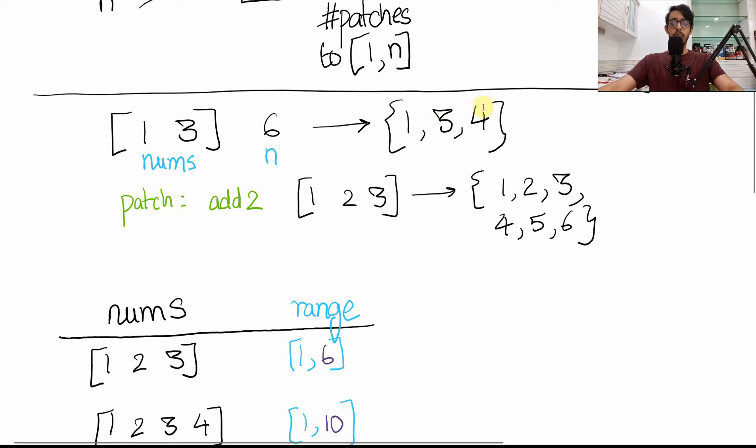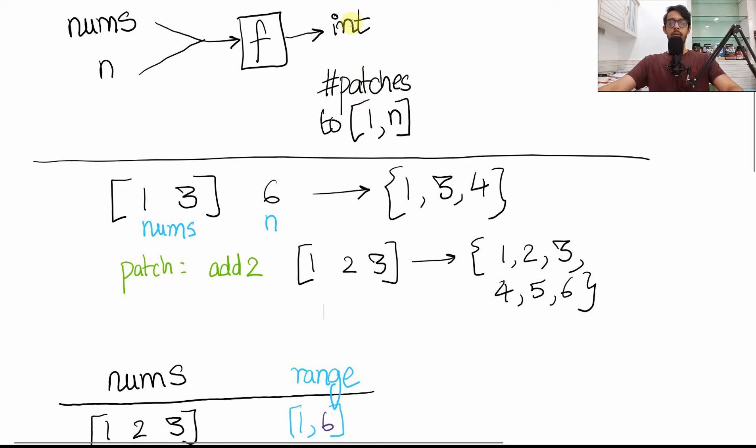We need two, five, and six all of them together. So one of the possible patches is going to be adding two. This means that the nums array is now going to look like [1, 2, 3] which can now generate one through six. Feel free to write it down on your own and enumerate all the possible combinations of these sums. Basically one patch was able to get us to the right answer and so we'll return one as the answer for this case.